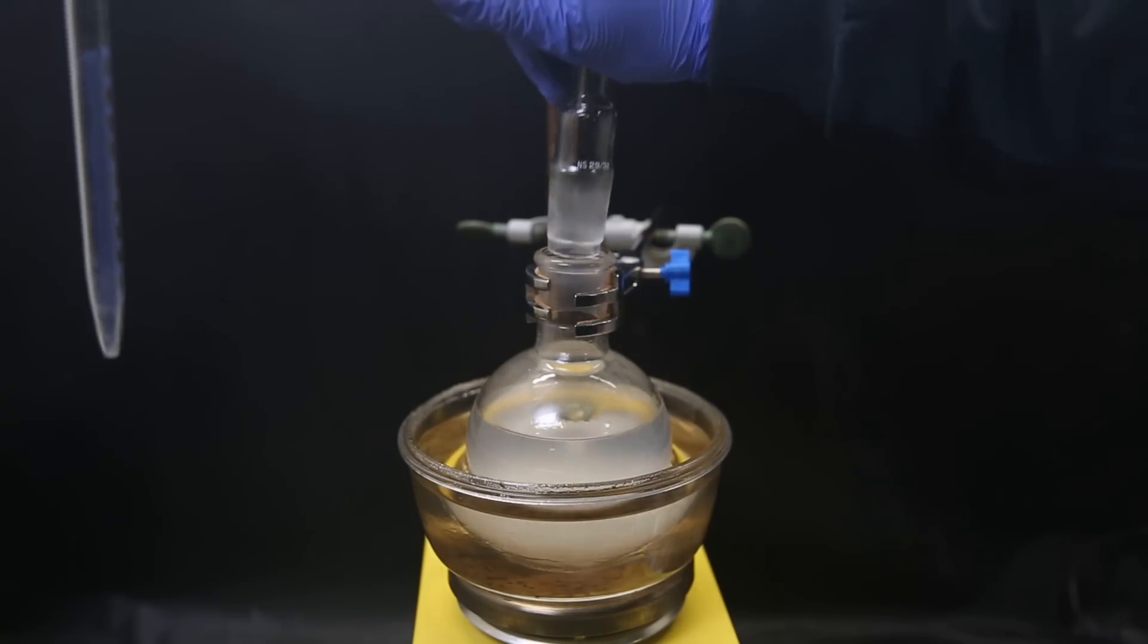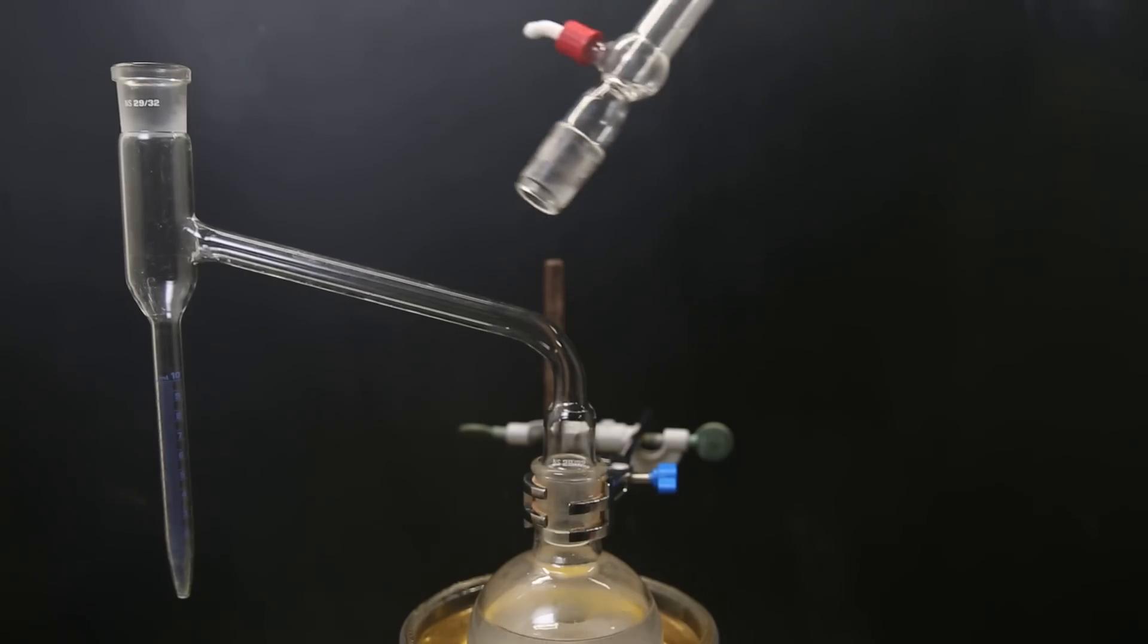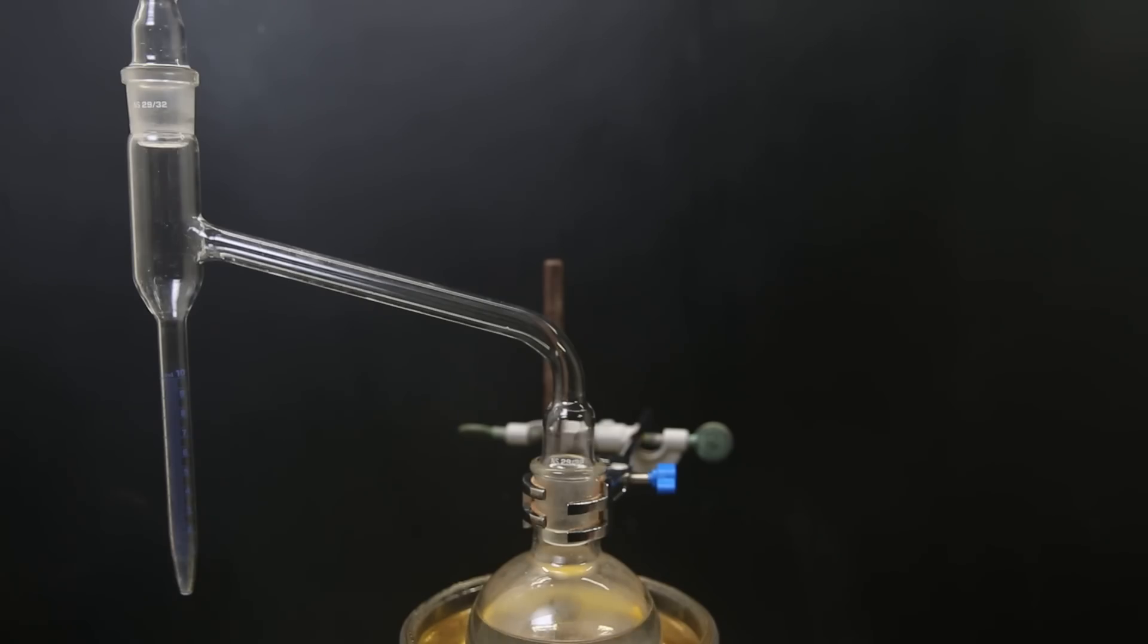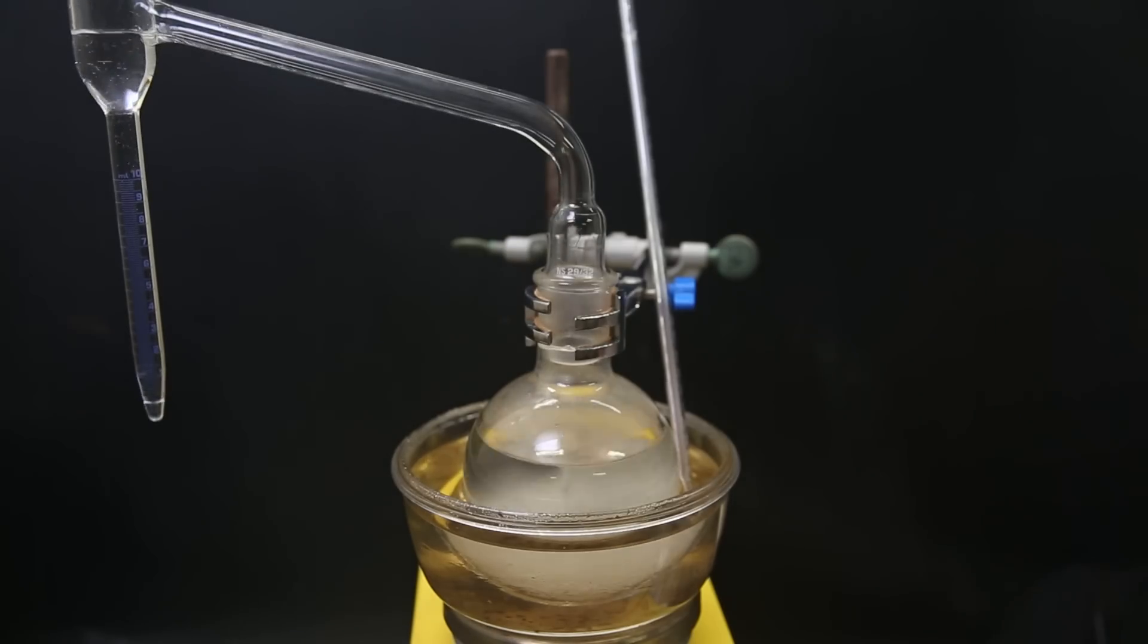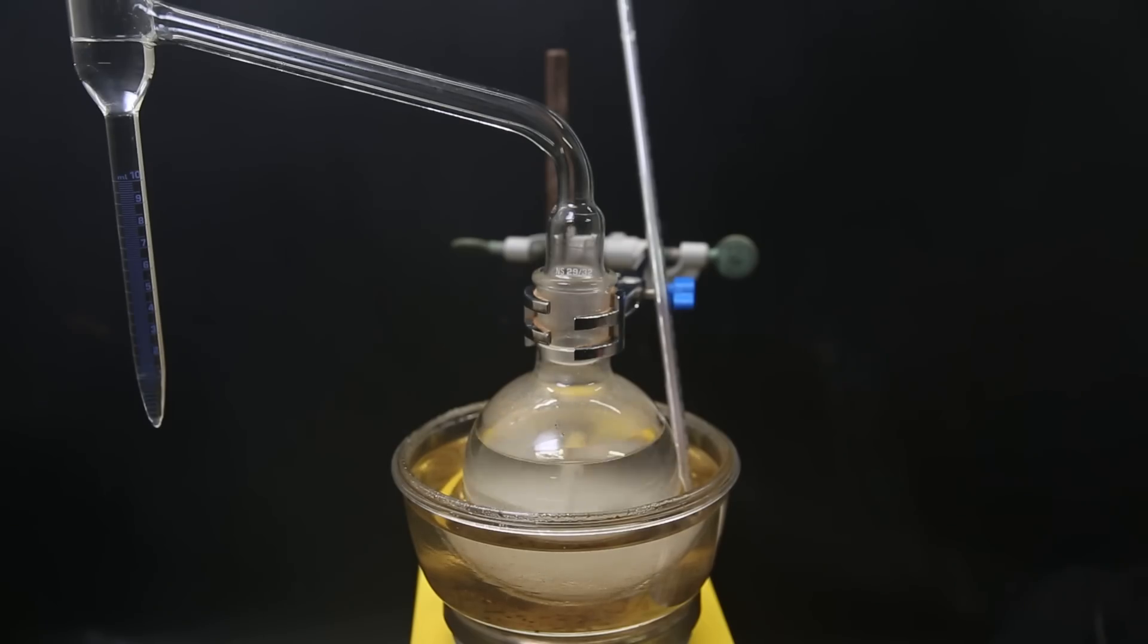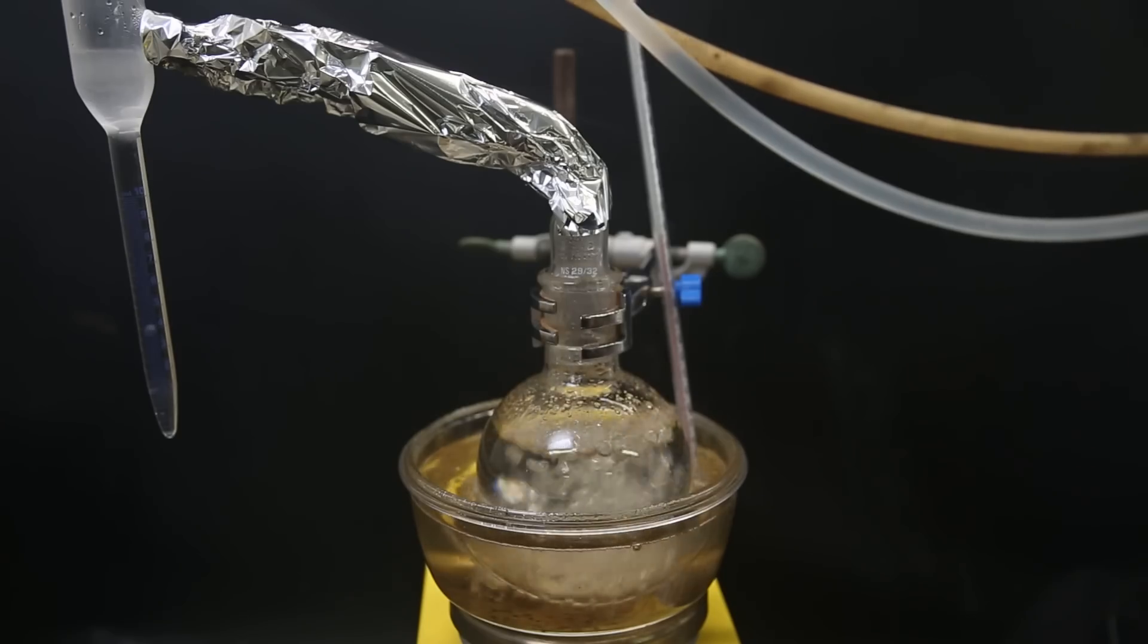I then attach a Dean-Stark apparatus with a condenser on top. When the mixture in the flask is boiling, it will azeotropically distill over a mixture of toluene and water that collects in the reservoir, which is the water that I added plus the water that is produced in the reaction. The water sinks to the bottom of the reservoir and the toluene stays on top. The toluene can then overflow back into the flask while the water keeps collecting in the reservoir. This way, we can constantly remove water from the reaction mixture and drive the reaction forward. I fill the reservoir with toluene so that it can start overflowing right away, though it is not mandatory, unless you really need to keep the amount of toluene in your flask constant. I then just continue heating until it starts to boil.